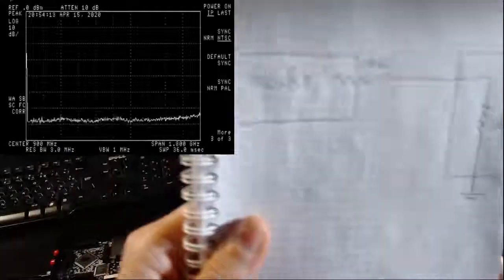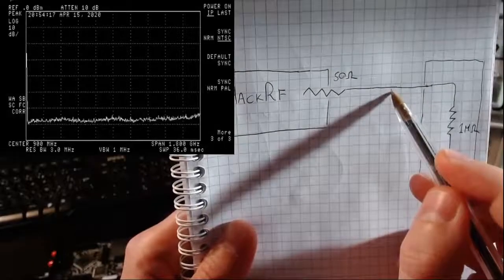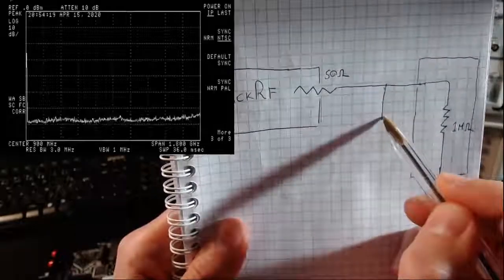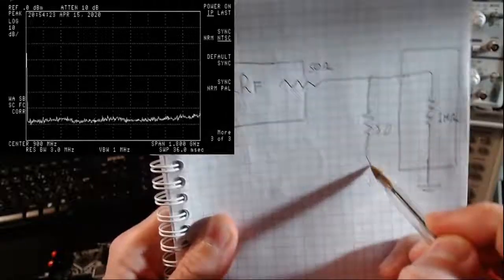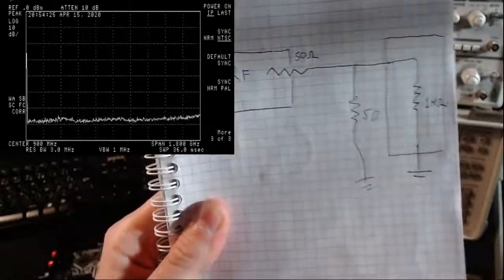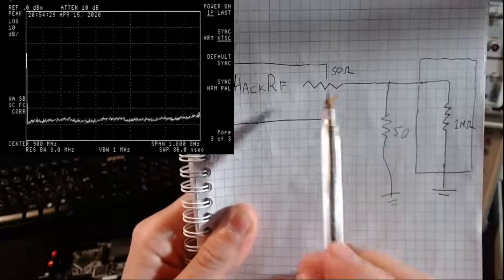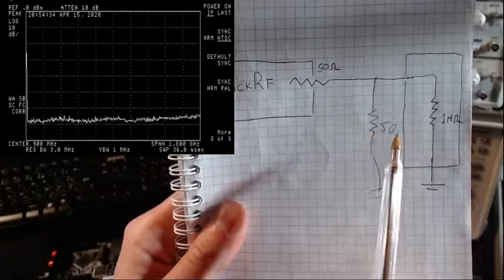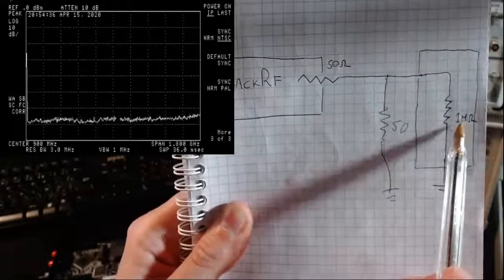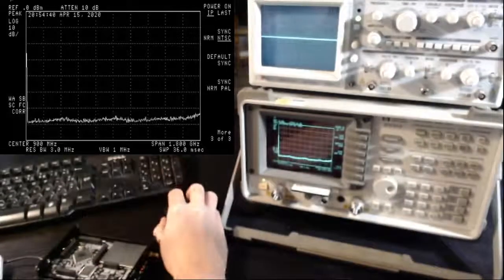...is adding in parallel to the oscilloscope another 50 ohm resistance, this terminator, as follows. So now the HackRF does not see just 1 megaohm as before, but two parallel resistances: one of 50 ohms and one of 1 megaohm.